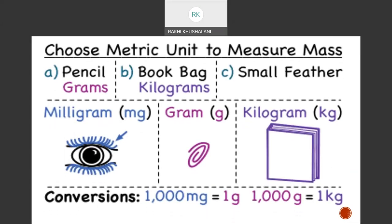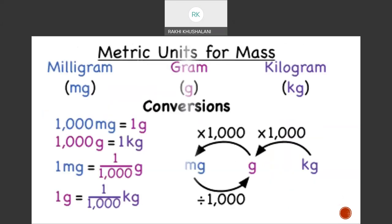Choose the metric unit to measure mass. If I weigh the lashes of my eyes, I would weigh them in milligrams. If I weigh a pen, eraser, sharpener, or pencil, I will measure it in grams. If I weigh a book, I will weigh it in kilograms. The conversion rate is 1000 for both. From bigger to smaller, we multiply by 1000; from smaller to bigger, we divide by 1000.